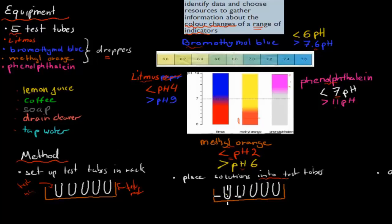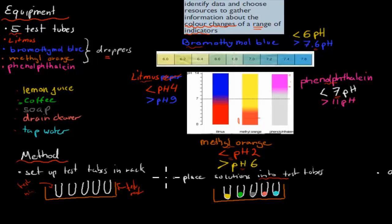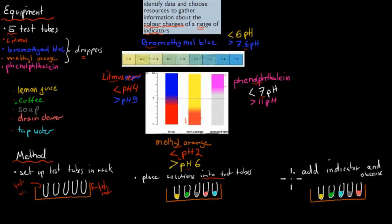The first test tube will have lemon juice, and we don't know the pH — we'll figure that out using the indicators. The second one will have coffee, the third will have soap, the fourth will have drain cleaner, and the last one is our control: tap water. For the final step, we just add the indicators. We have to repeat this experiment four times in total — once for every indicator.